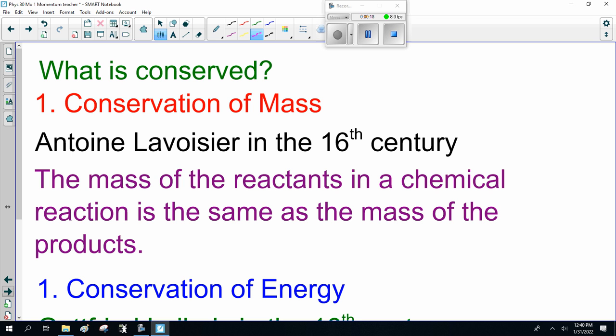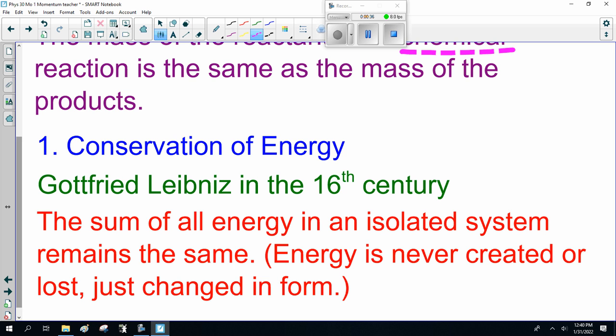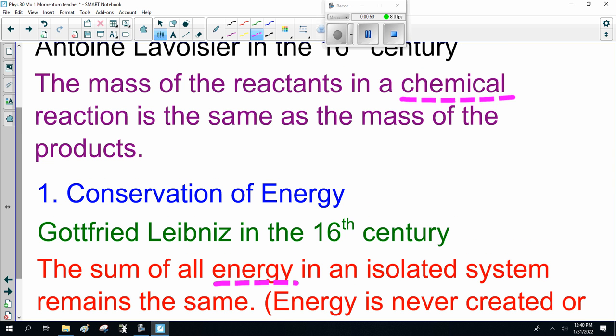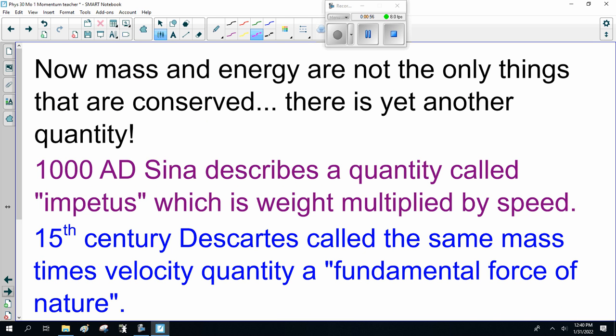Before we begin, some definitions. What is conserved? Conservation of mass: Antoine Lavoisier in the 16th century said the mass of the reactants in a chemical reaction is the same as the mass of the products. Conservation of energy: Gottfried Leibniz in the 16th century said the sum of all energy in an isolated system remains the same. Energy is never created or destroyed, just changed in form. Mass and energy are not the only things conserved. There is yet another quantity.